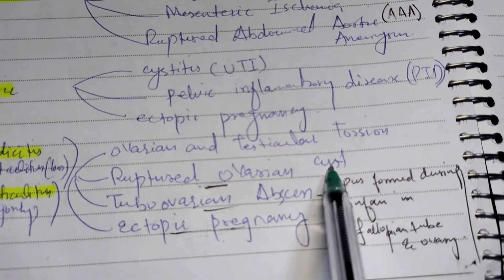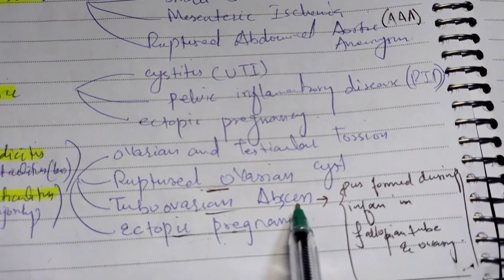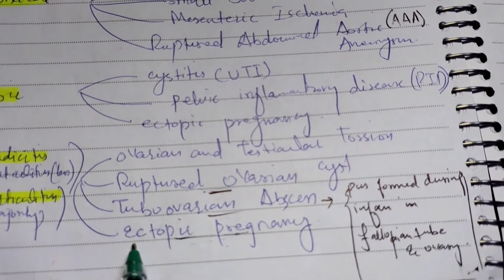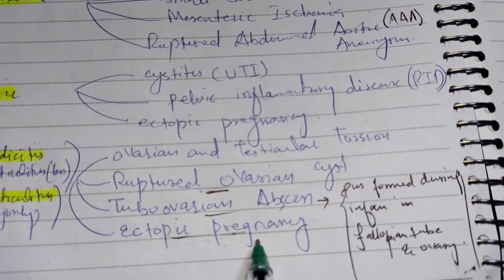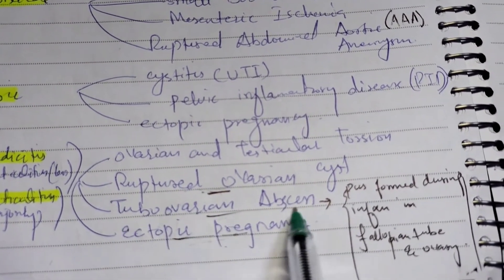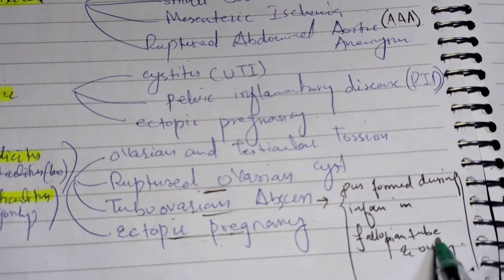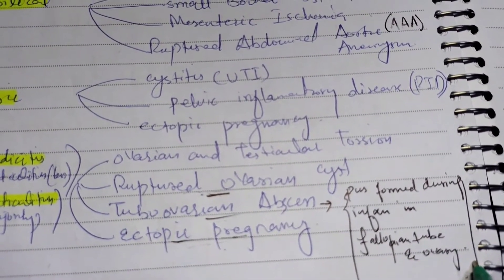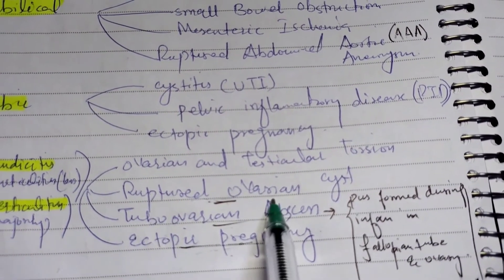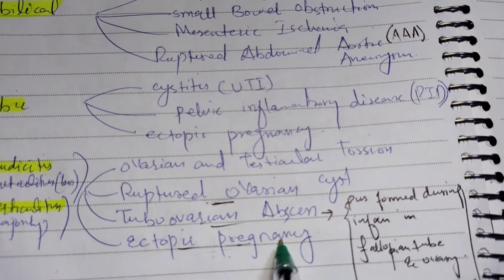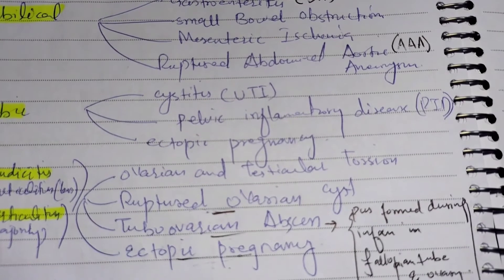Additional common lower quadrant differentials include ruptured ovarian cyst, tubo-ovarian abscess — in which pus forms during infection in the fallopian tube and ovary — and ectopic pregnancy, which can also present in the suprapubic region.